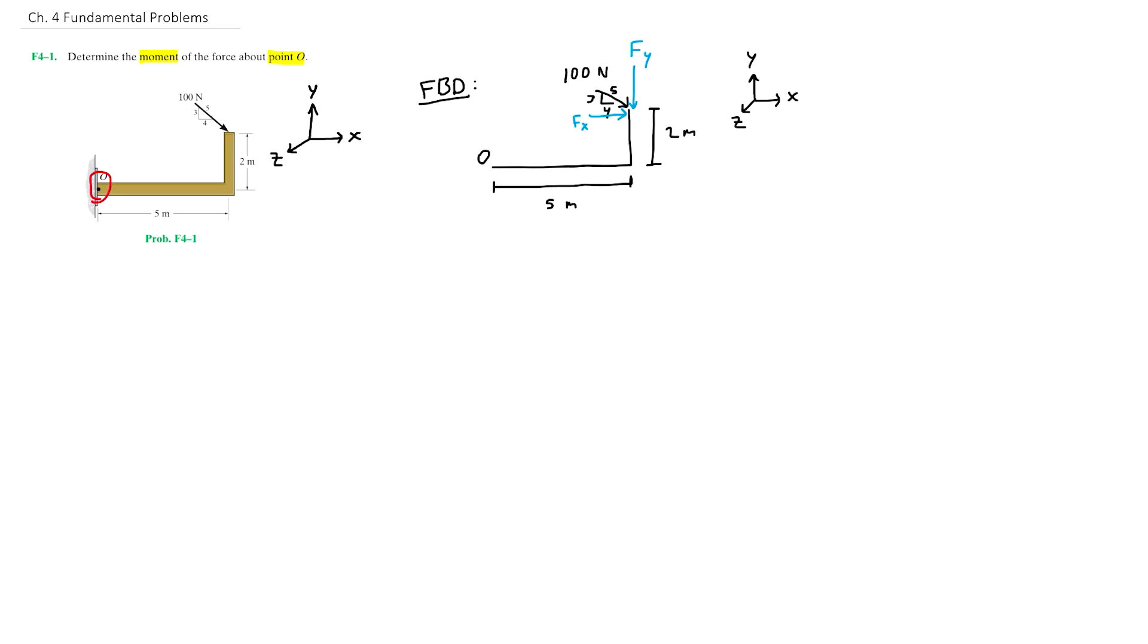Now that we have the x and y components on our free body diagram, we can describe each moment that is created by each component. Remember that moments M are equal to force F times distance d. So a moment is basically equal to the product of force times distance. Knowing this and having our free body diagram, we just need to sum up our moments about point O based on the diagram.